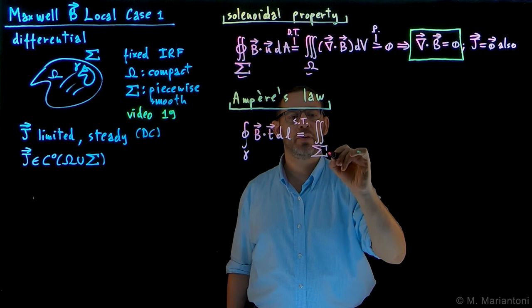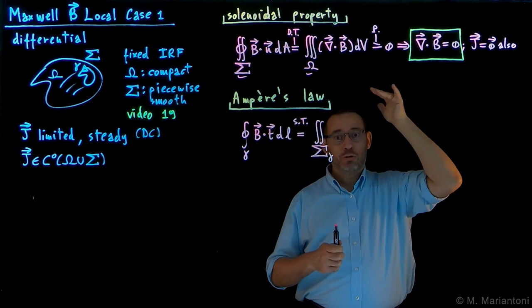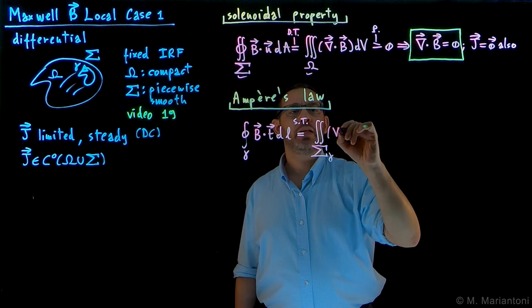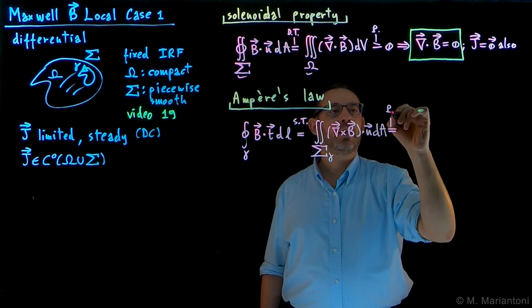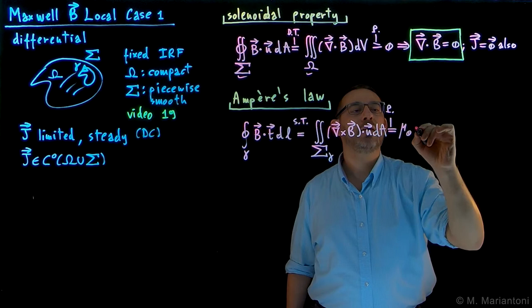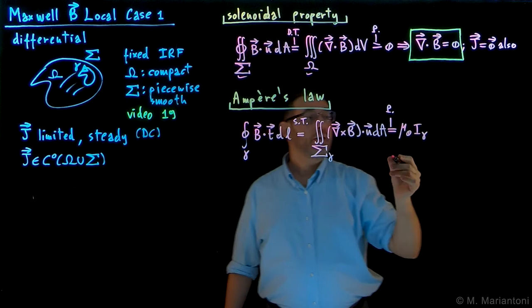This allows us to rewrite this integral as the surface integral on an open surface capital Sigma gamma, where Sigma gamma has this line gamma as a border. And so this becomes the curl of B dot dA. The flux of the curl of B is my new vector field, and now the physics of the problem. Math is done, I'll take care of the physics.